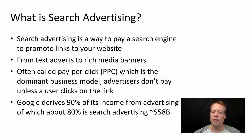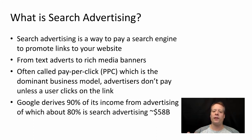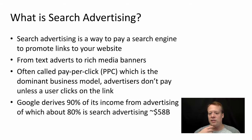All search advertising is often funded through what's called a pay-per-click business model, which means advertisers don't pay anything unless a user actually clicks on the link. That's intriguing because you have all these ads out there but no one's spending money unless someone clicks. It's obviously a rich business though — Google derives 90% of its income from advertising, about 80% of which is search advertising, totaling around $58 billion in recent years.